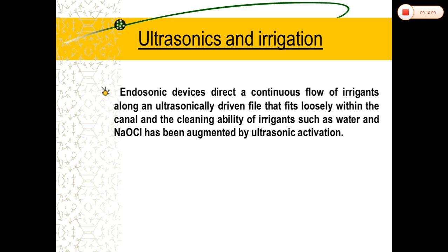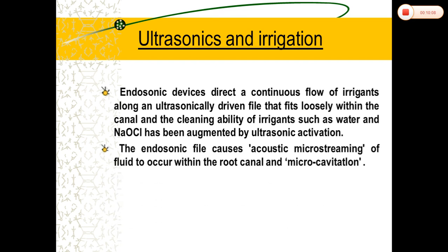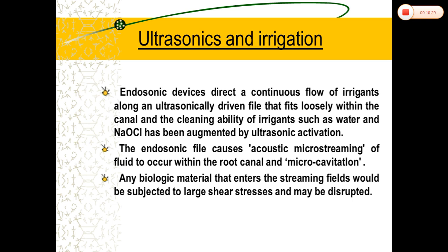Coming to ultrasonic irrigation: ultrasonic irrigation has been shown to produce a cleaner root canal and eliminate bacteria from the walls more effectively compared to conventional methods. Use of ultrasound causes continuous flow of irrigant in the canal, thus preventing accumulation of debris. Its mechanism of action: when a small file is placed in the canal and ultrasonic activation is given, ultrasonic energy passes through the irrigating solution and exerts acoustic streaming or scrubbing. Within the root canal, this occurs in the form of micro-cavitation. This mechanical energy warms the irrigant — if sodium hypochlorite is used, the mechanical streaming energy warms it and dislodges debris in the canal.